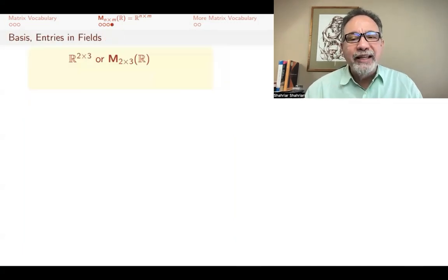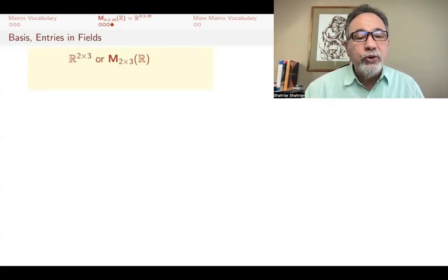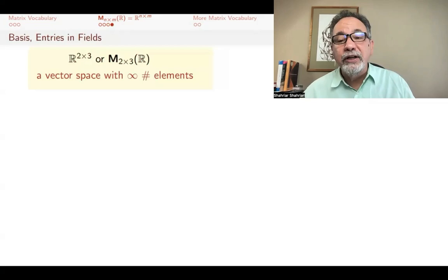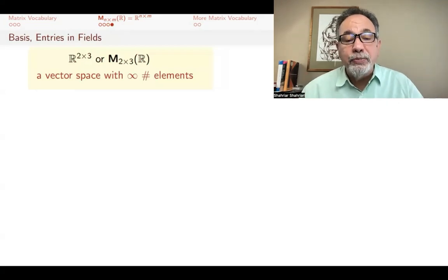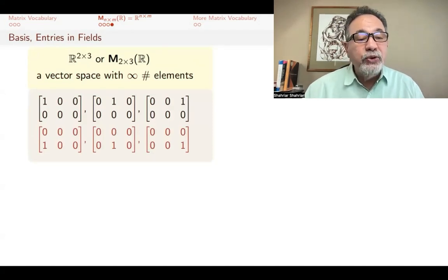This next slide, I'm going to say things that if you haven't done linear algebra yet, you might not quite follow and you can just ignore. But just to whet your appetite, I'm going to focus on two by three matrices with real entries. This is a vector space that has infinite number of elements. There's infinite number of such matrices. But if you look at these six particular matrices, the ones that have a one in one entry and zeros everywhere else, they tell you something.